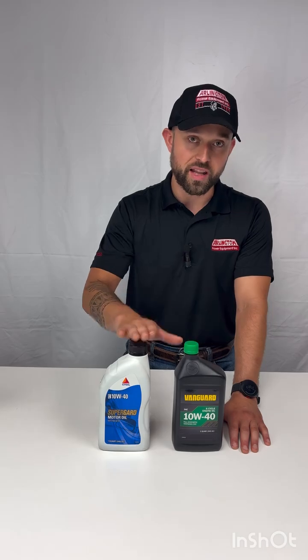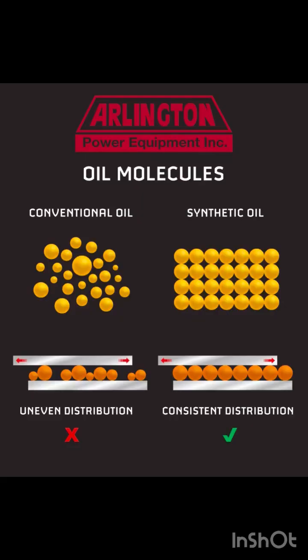Next we're going to be talking about the difference between a conventional oil and a synthetic oil. Oil makes up about 50% of an engine's cooling capability. The difference in these oils lies in its consistency. The molecules in conventional oils are all different. Synthetic oils are manufactured with consistency, which helps viscosity control — for instance, the change between 10W and 30W — and are more resistant to breaking down, giving the oil a longer lifespan.